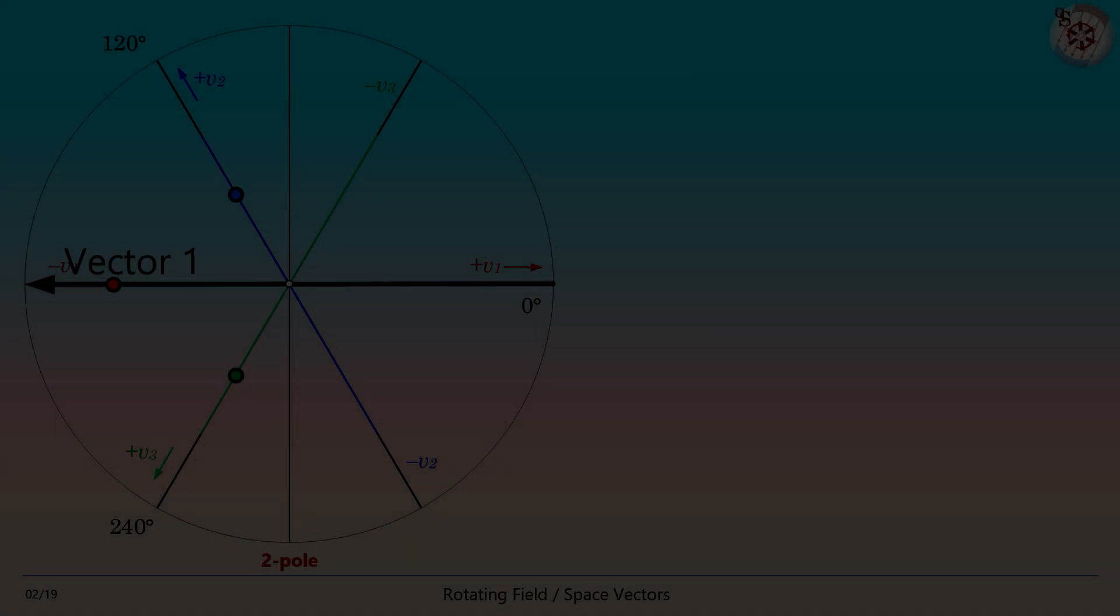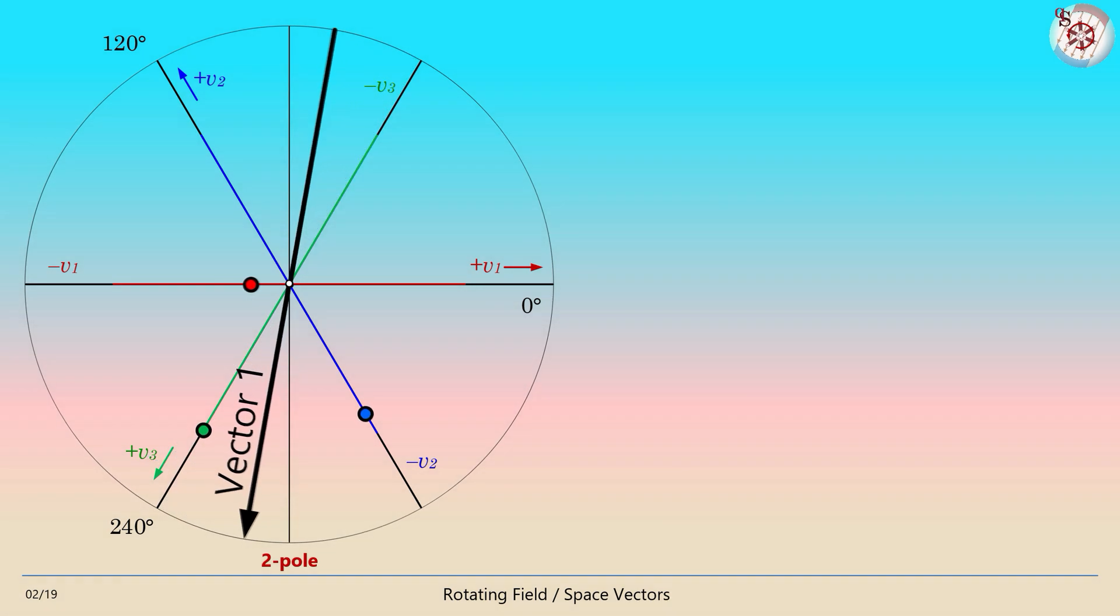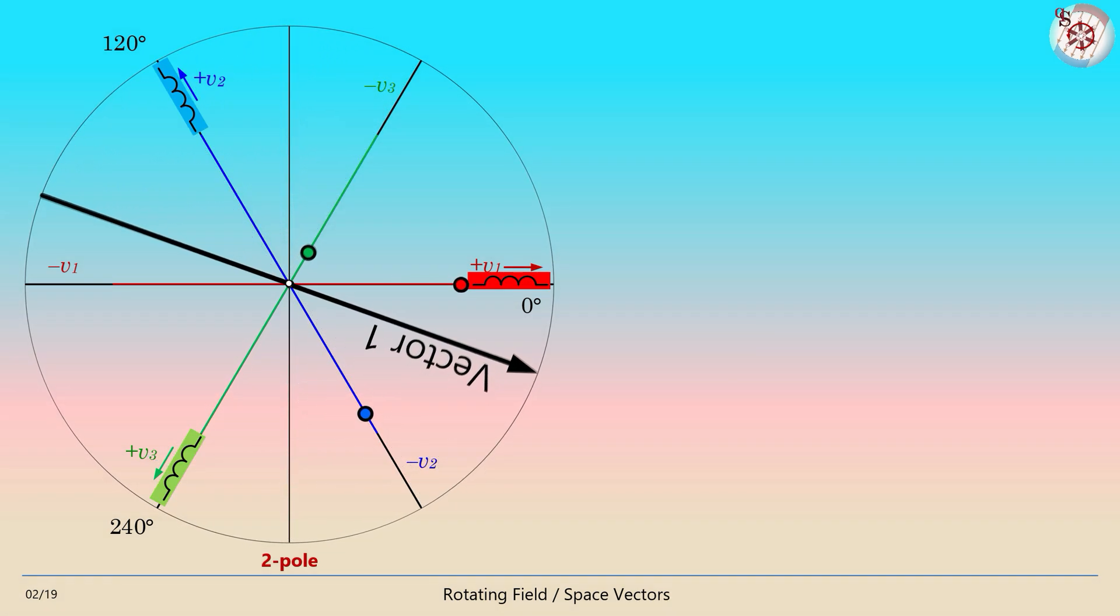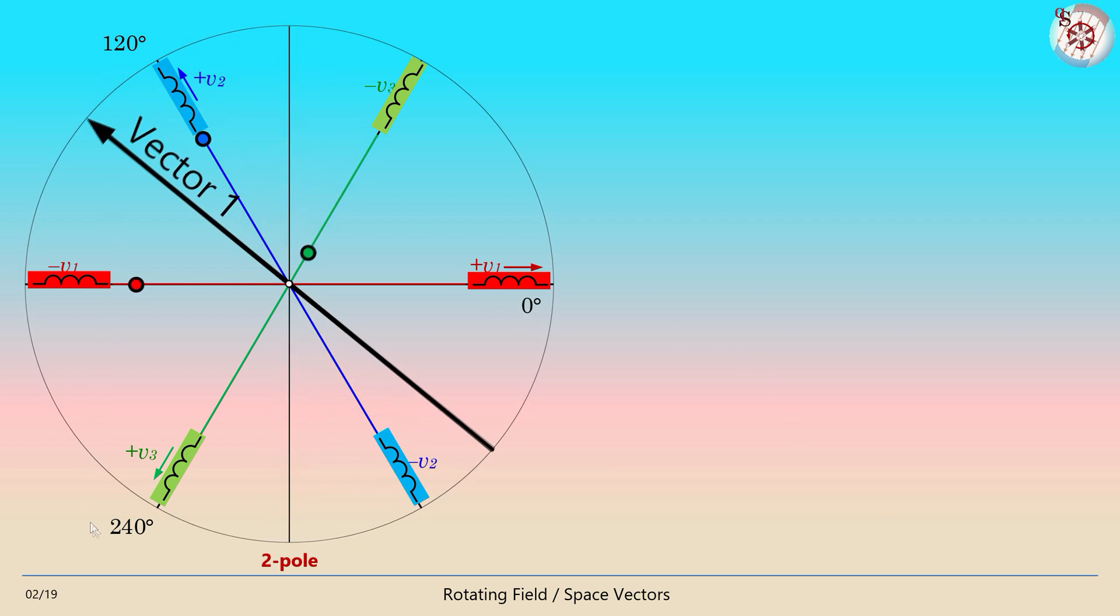The three voltages of a three-phase system can be used to create a rotating voltage space vector. This is done by placing three, or better six, coils at an angle of 120 degrees in a circle while feeding them with those three voltages. The sum of all three voltages creates a rotating voltage vector of a constant length.